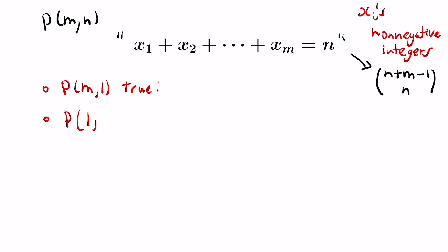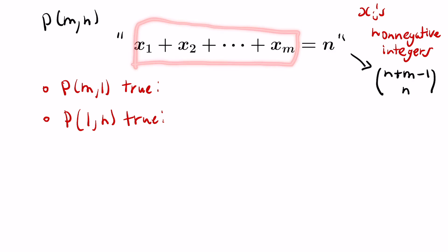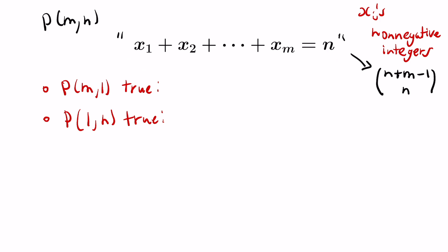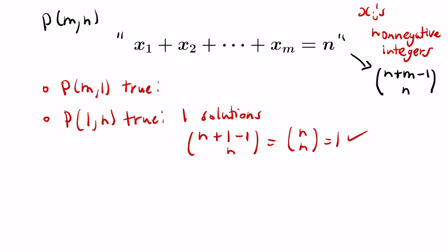Next, we check that P(1, n) is true for any n. If m = 1, we have only one variable and we're asking how many solutions x₁ = n has. Well, x₁ is forced to be n, so there is only one solution. Our formula gives C(n + 1 − 1, n) = C(n, n) = 1, which matches. So our base cases hold.